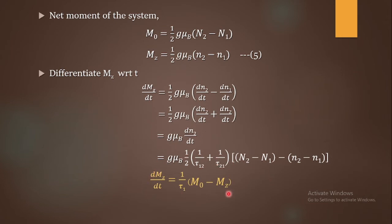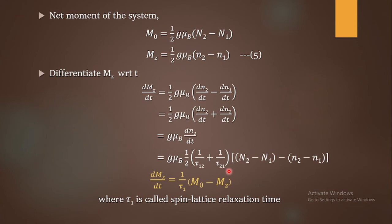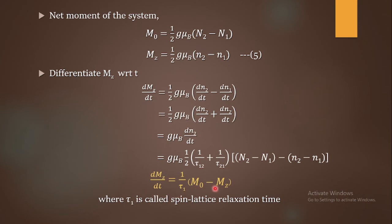Finally, we obtain dMz/dt = (1/τ1)·(M0 − Mz), which is the rise in magnetization due to the application of the static field (equation 6). Here τ1 is the spin-lattice relaxation time. This is the key equation representing spin-lattice relaxation, and it explains the build-up of magnetization when a magnetic field is applied along the z-direction.